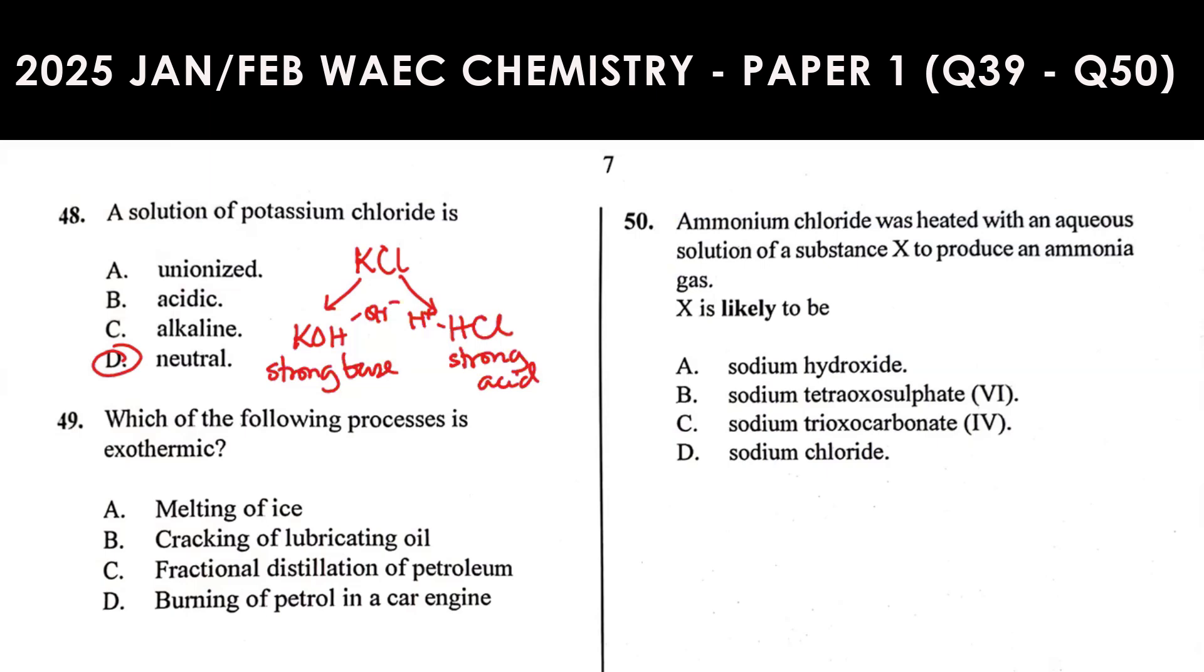Question 49: Which of the following processes is exothermic? Which of the following processes involves the release of heat energy? Of course, combustion. Burning of petroleum in a car engine, that is an exothermic process or reaction. Melting of ice, cracking of lubricating oil, fractional distillation of petroleum are all endothermic processes because heat is taken in to perform these processes. So the answer is D.